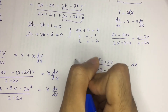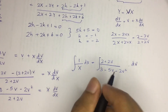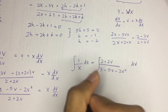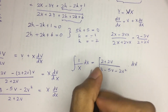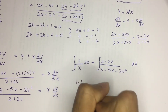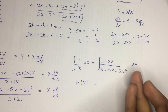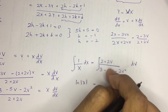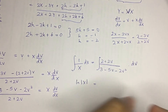We integrate both sides. The left side gives ln|X|. For the right side, you need to use the partial fraction method to solve the integral. You can try that on your own — after integration you will get another type of equation relating X and v.